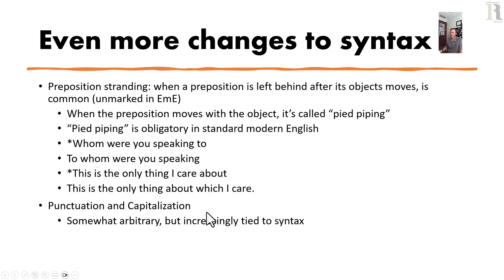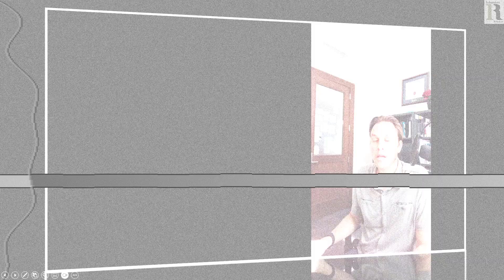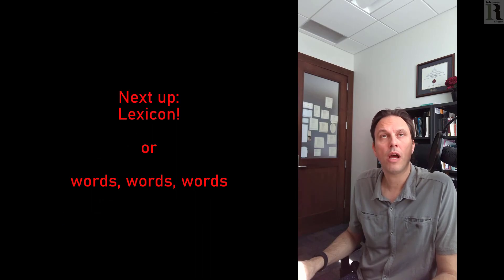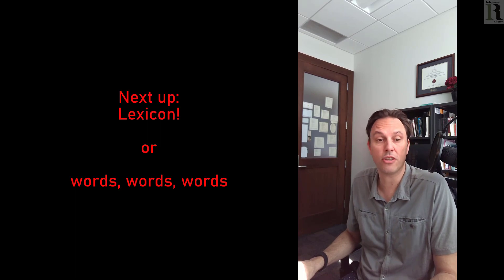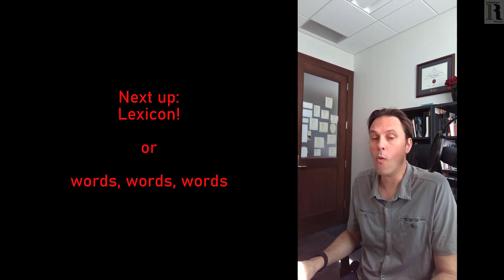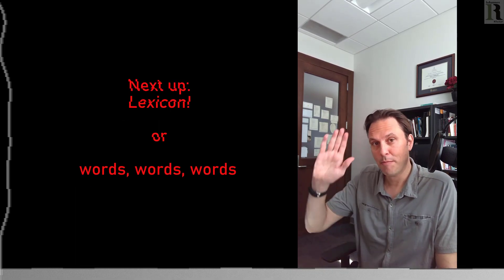Punctuation and capitalization, somewhat arbitrary earlier, become increasingly tied to syntax by the end of the early modern period. That's all for syntax today. Next up we're going to talk about lexicon and vocabulary, which is the fun stuff in early modern English because they just start going wild with it.